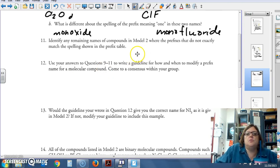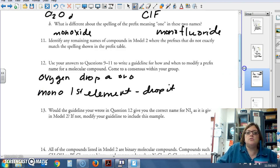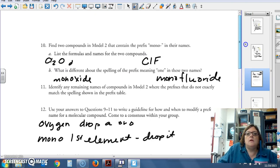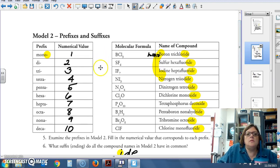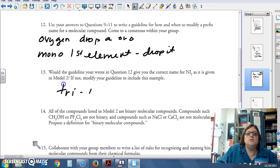Identify any remaining names of compounds in model two where the prefixes do not exactly match the spelling shown in the prefix table. So let's write a guideline for how to modify a prefix. Basically, if it starts with oxygen, you drop the A or O. And if it's mono as the first element, we drop it. Would the guideline you wrote in question 12 give you the correct name for nitrogen triiodide as it is given in model two? Nitrogen triiodide. Right here. Triiodide. Hopefully, you didn't say triiodide. We don't drop that I.